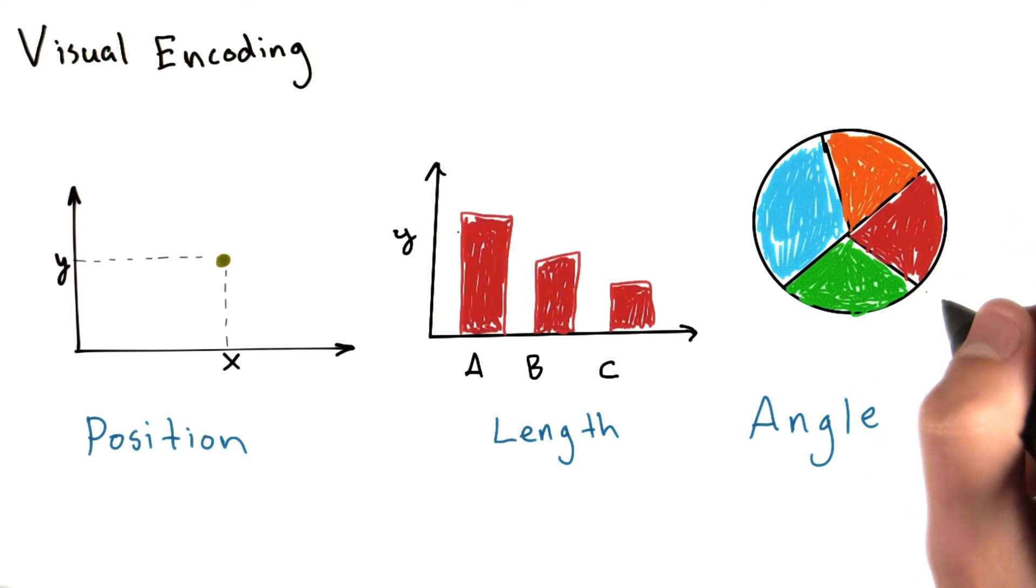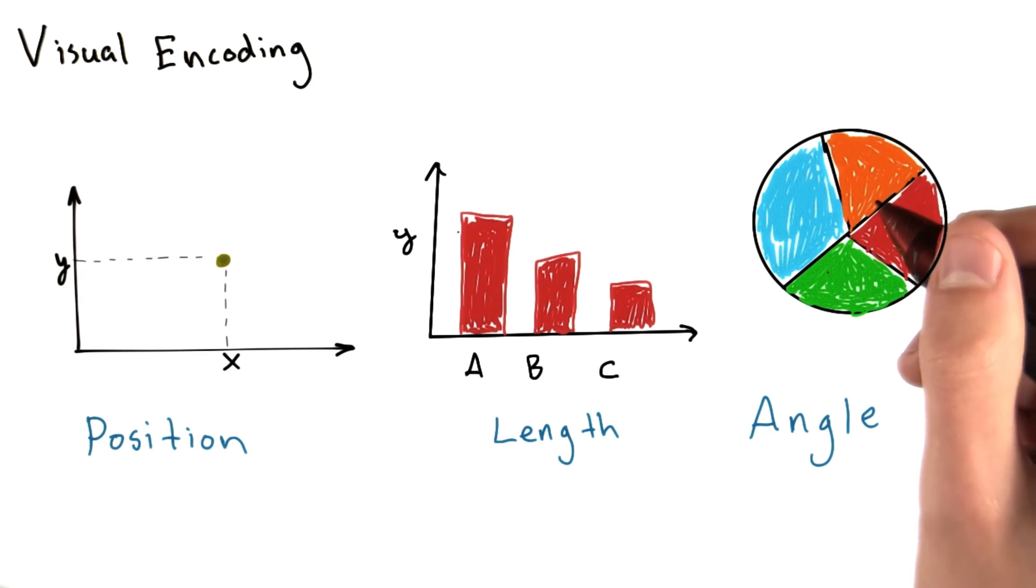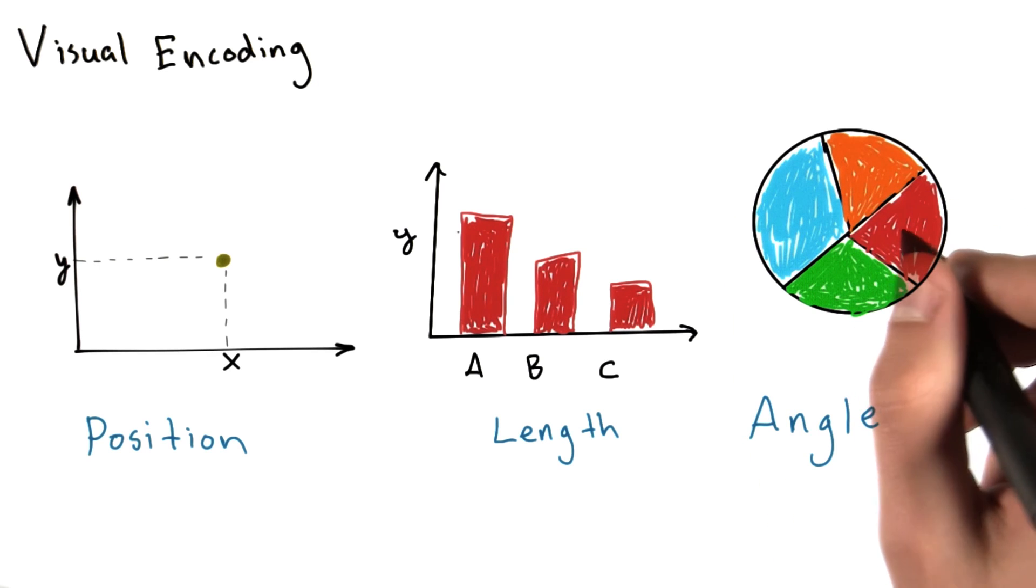One negative aspect to using angles as a visual encoding is that human eyes can have a difficult time differentiating angles. For example, 25 degrees and 30 degrees may look very similar. Because of this, angle is an encoding that you may want to avoid if you're trying to show very small differences.